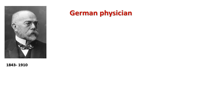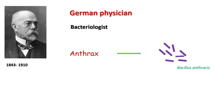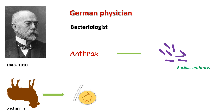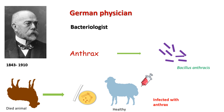Robert Koch was a German physician who was very much interested in bacteriology. When he was working on the disease anthrax, he discovered it is caused by a rod-shaped bacterium called Bacillus anthracis. He isolated Bacillus anthracis from the blood sample of a dead animal and inoculated the bacteria into a healthy animal. Koch observed that the healthy animal suffered from the same disease, anthrax. This experiment laid the foundation of Koch's four postulates.